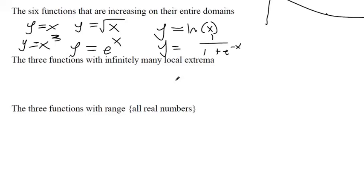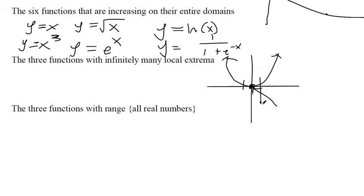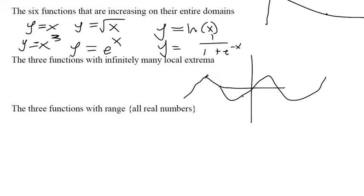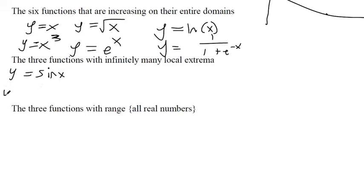Next, three functions with infinitely many local extrema — a local extremum is a local max or min on some small interval. Y equals x squared has one point of local extrema, but we need infinitely many. The sine and cosine functions make wavy graphs with a max, then a min, then a max, then a min — infinitely many — so those are two of the three.